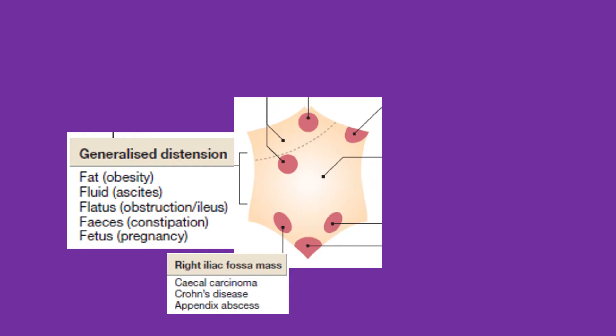When we feel a mass on the right iliac fossa, the possible differentials are cecal carcinoma, Crohn's disease, and appendiceal abscess.